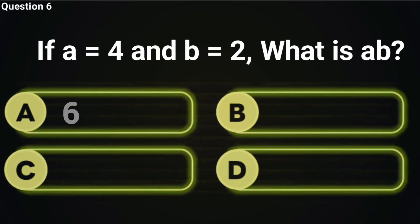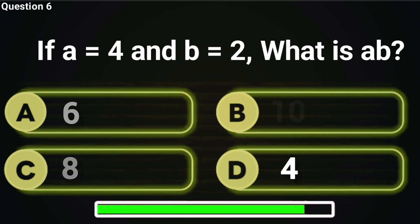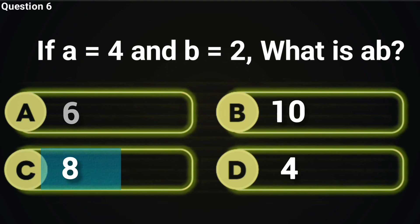If A equals 4 and B equals 2, what is AB? It's just multiplication dressed up in fancy algebra clothes. Answer C, 8 is correct.